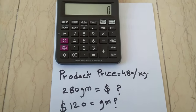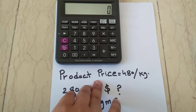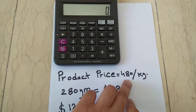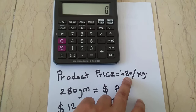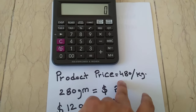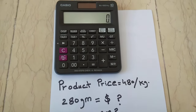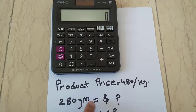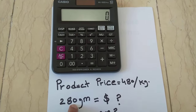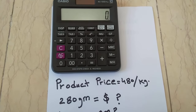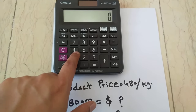So the first thing I will explain: for example, the price of the product is 480 dollars per kg — it could be euros, rupees, or any currency — and you want to know how much dollars you have to spend to get 280 grams of that particular product.